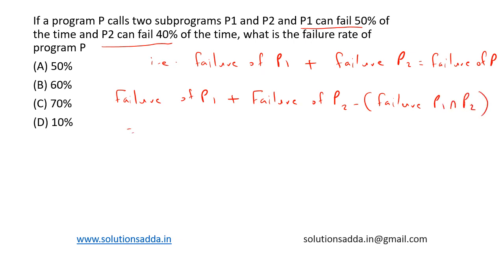This will be the final result, which is equal to 0.5 is failure of P1, 0.4 failure of P2 minus 0.5 into 0.4, which is equal to 0.9 minus 0.2, which is equal to 0.7, which is equal to 70%.